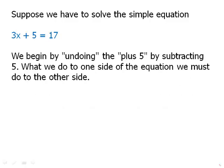We begin by undoing the plus 5 by subtracting 5. What we do to one side, we must do to the other. So we subtract 5 from both sides of the equation. 3x plus 5 minus 5, the 5s cancel on the left side. And on the right side, 17 minus 5 is 12.